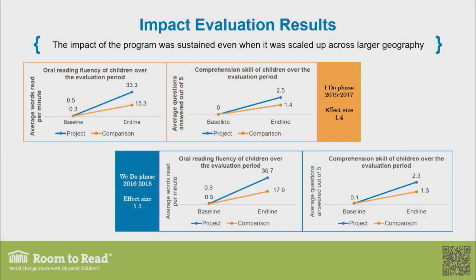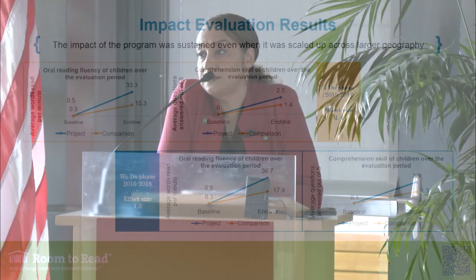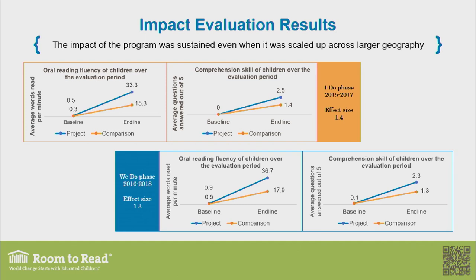In the 'I do' model, Room to Read demonstrates the program. In the 'we do' model, we work directly with the state government, releasing some responsibility into the system. In the 'you do' model, the state government implements completely on its own with our technical assistance. The first two phases have been completed and we're in the third. Evaluations from 2015–2017 in Chhattisgarh and Uttarakhand, and 2016–2018 partnership phases, showed effect sizes between 1.3 and 1.5 standard deviations — translating to fluency rates in program schools that are two times that of comparison schools.